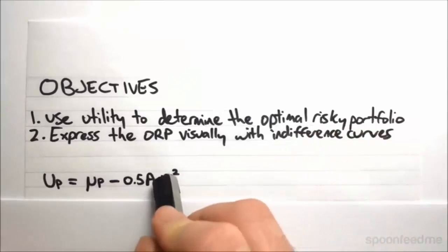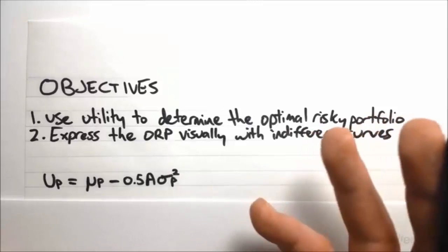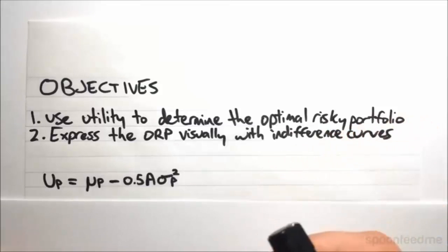And at the same time since we're subtracting here, if you've got a high variance, then you've got a lower utility and you're less happy. Which makes sense, because if you've got more risk, you're less happy with the investment.